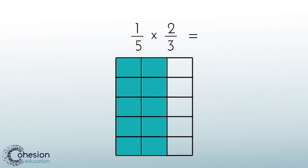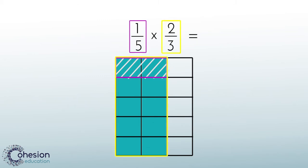Once we have our five rows drawn, we need to model one-fifth of them. This means we will shade in one of the rows. It is important at this step that we do not shade across the entire row. We only want to find one-fifth of the already shaded part from the two-thirds. This means we will only shade over what has already been colored in in the first row.